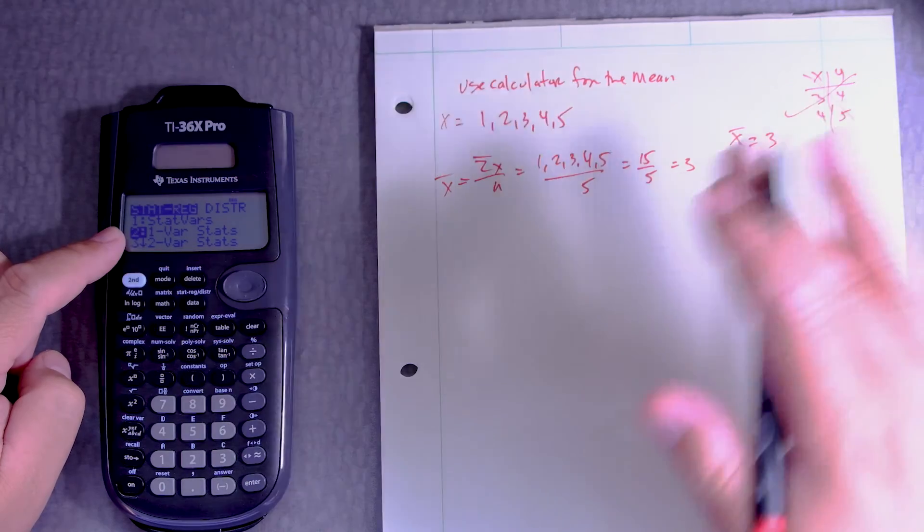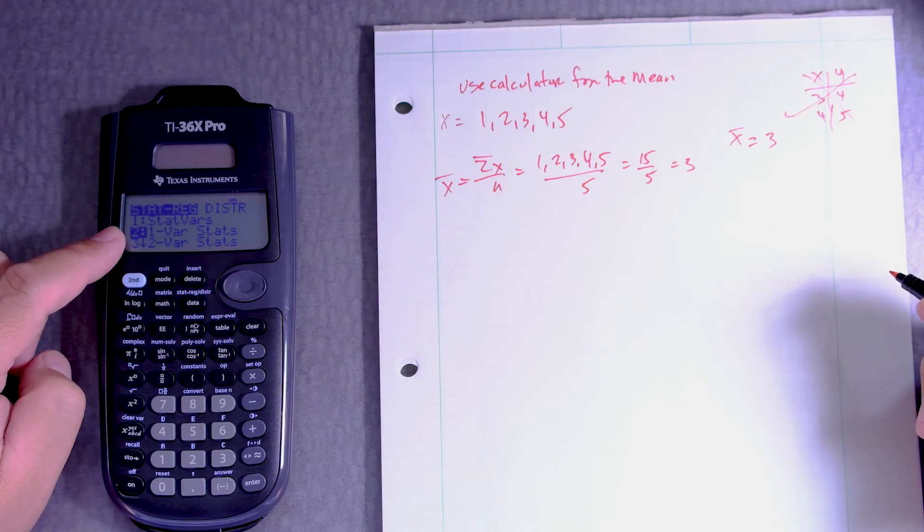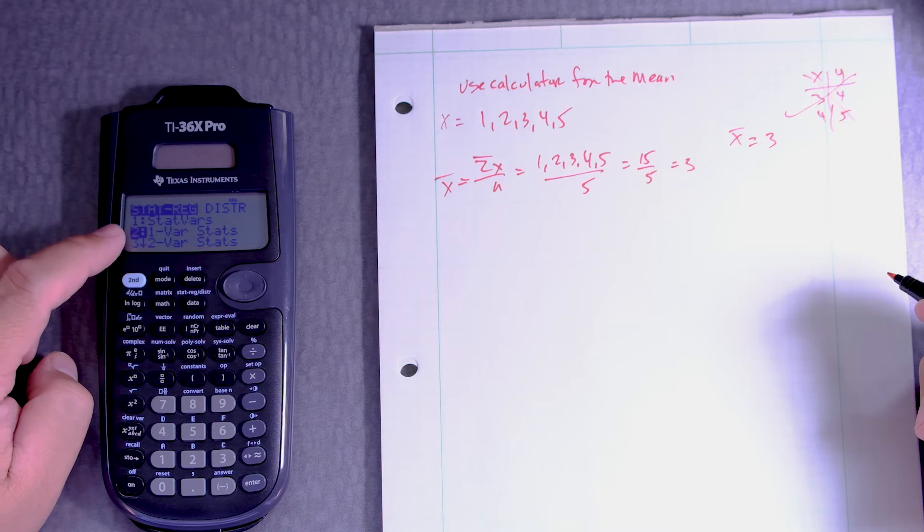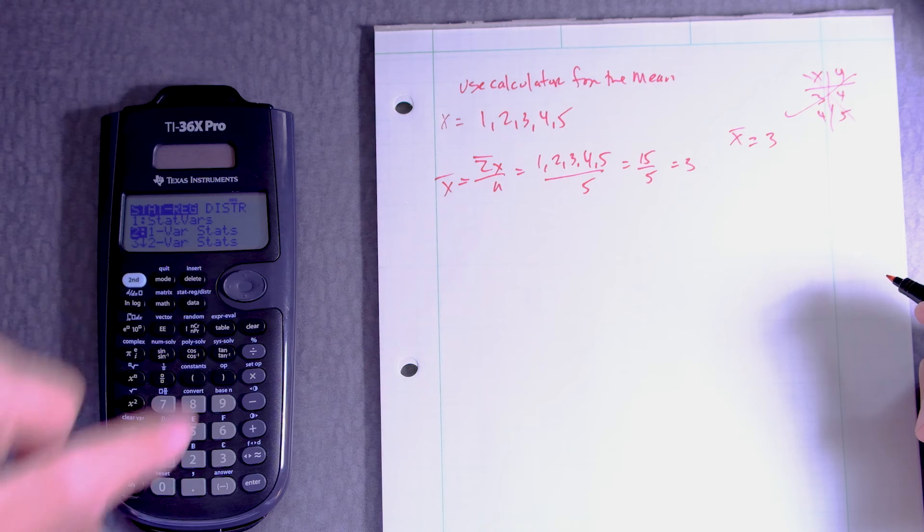In another video I'll talk about if I have a table, a frequency table. So we're going to press number two or scroll down to number two.